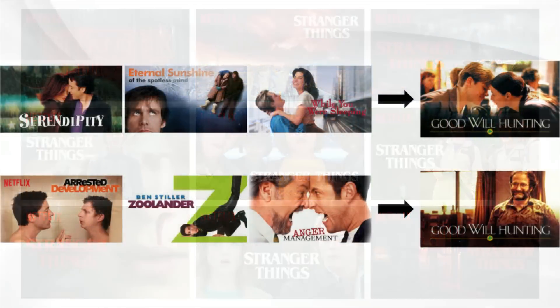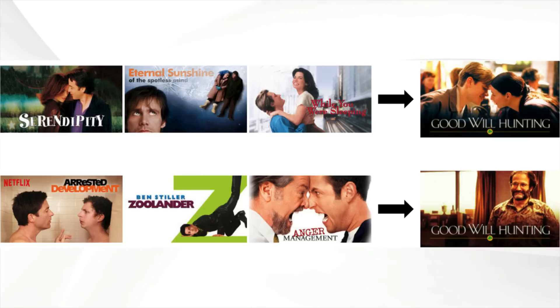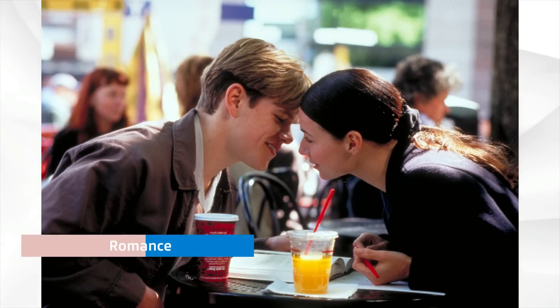Here's an example: Good Will Hunting the movie. If you really like romance or romantic comedies, you'll probably get that image at the top. If you like comedies — maybe even a little bit of action or a little bit of controversy — you'll get the image at the bottom. Completely different movie posters. Here's the high resolution of those for romance and for comedy. If you like Robin Williams, obviously it will pick Robin Williams to show to you.